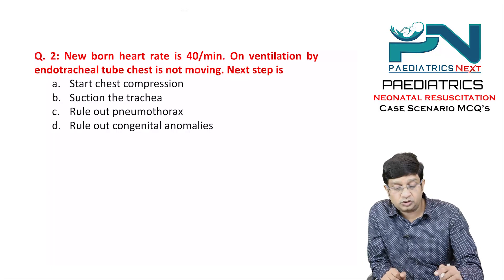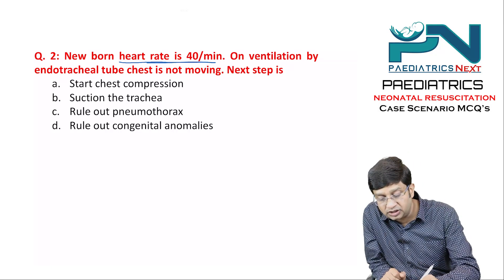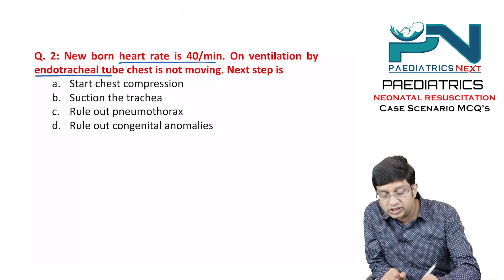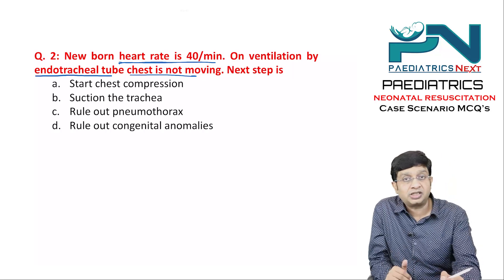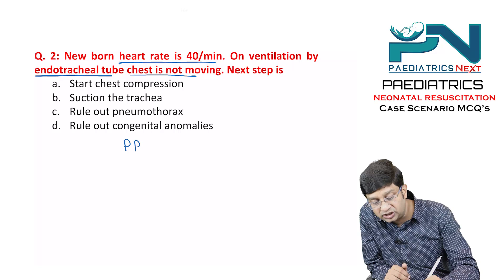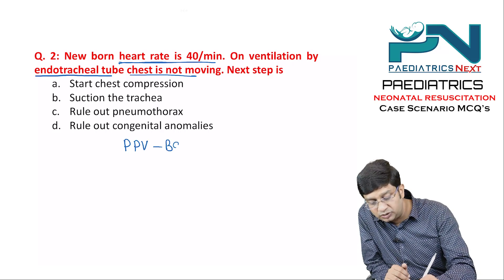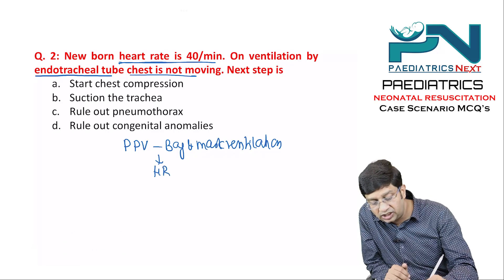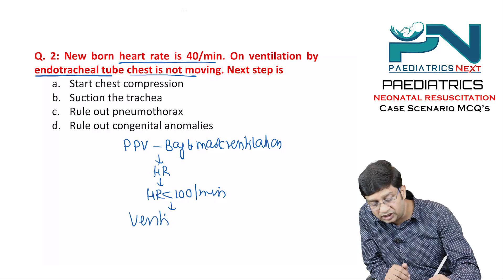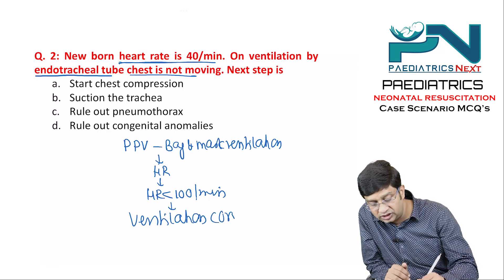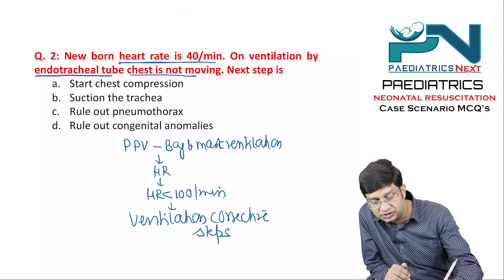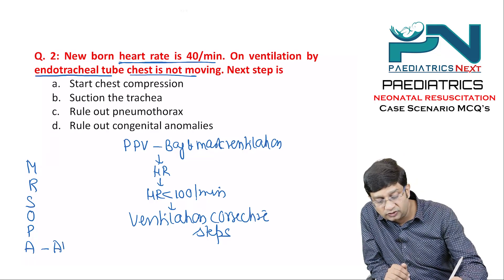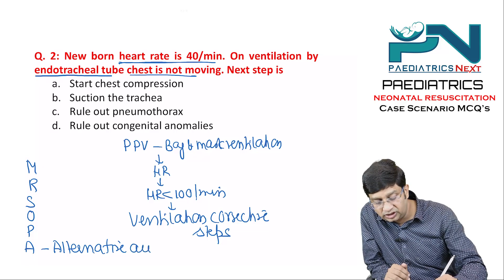Next question: a newborn's heart rate is 40 per minute on ventilation by endotracheal tube and the chest is not moving. You may recall that initially you start positive pressure ventilation — bag and mask ventilation — then monitor the heart rate. If the heart rate is less than 100 per minute, you proceed to ventilation corrective steps, remembered by the mnemonic MR SOPA, where A stands for alternative airway.